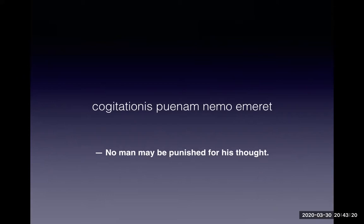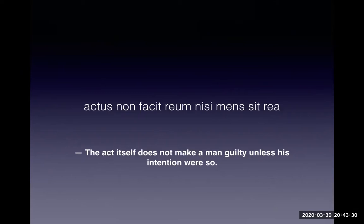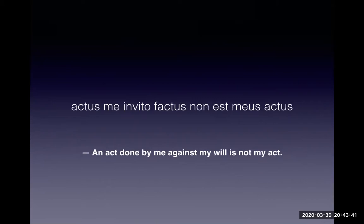Next is the maxim that no man may be punished for his thought. Then, the act itself does not make a man guilty unless his intention were so. And actus me invito factus non est meus actus, which translates to 'an act done by me against my will is not my act.' Under Article 3 of the Revised Penal Code, the first element of a felony must be that the act or omission is voluntary. So if the alleged criminal act is committed by an insane person, he is not criminally liable, but he may be civilly liable. Refer also to Article 12 of the Revised Penal Code.